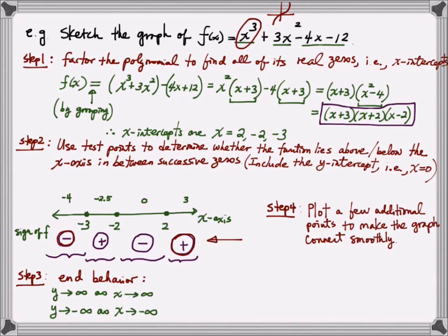Starting from the leftmost test point, negative 4. Put this in your calculator. It would return a negative 12 function value. Negative 3 is one of our zeros, which means that its function value should be zero. Negative 2.5 is our next test point. Its function value is 0.625. And as you're putting in the function value, you should confirm whether or not the function value matches with the sign that you obtained in step 2. For example, negative 4 has the function value of negative 12, which is negative, and that matches with the negative sign that we got.